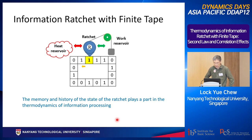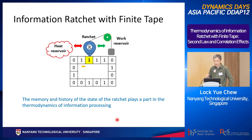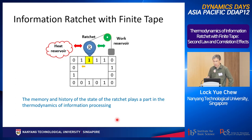First, some background on ratchet systems in general. A ratchet can be thought of as a sort of Maxwell demon — this morning you heard the talk by Professor Sagawa. His version is more like the measurement and feedback type. But there is another category called the information ratchet, which is not driven externally but is more autonomous. It started with work by Mandel and Jasinski and followed up by work by Boyd and Crutchfield.